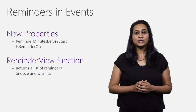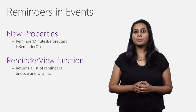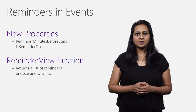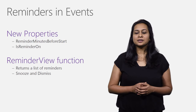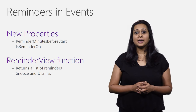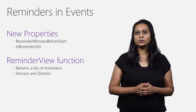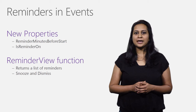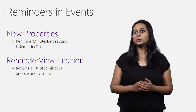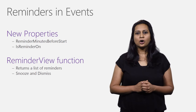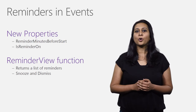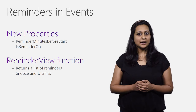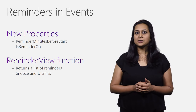Reminders. Reminders for events in V2 are basically two properties on the event entity: ReminderMinutesBeforeStart and IsReminderOn. These properties can be set when an event is created or updated. ReminderMinutesBeforeStart is the time in minutes before the start of the meeting that the reminder should fire. IsReminderOn is a Boolean indicating whether the reminder is set to fire. In addition, the API offers a reminder view function, enabling an app to easily retrieve all reminders that need to fire within a particular time frame. Each reminder returned also contains event details, so the app can pop up a reminder. Once the reminder fires, the app can call snooze and dismiss actions on the reminder, recreating a user experience similar to Outlook.